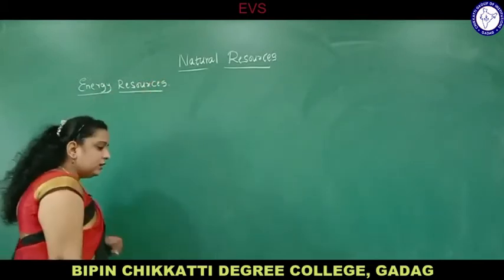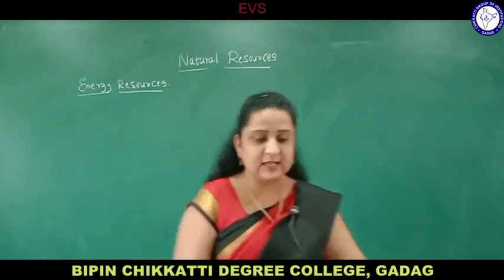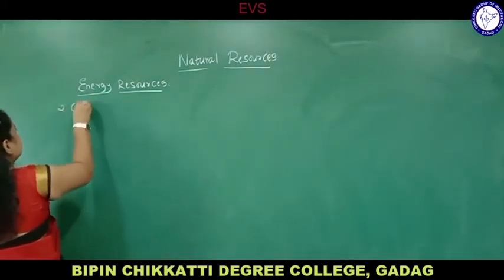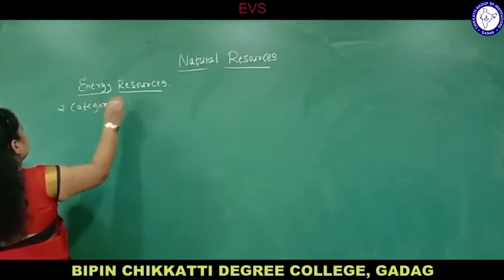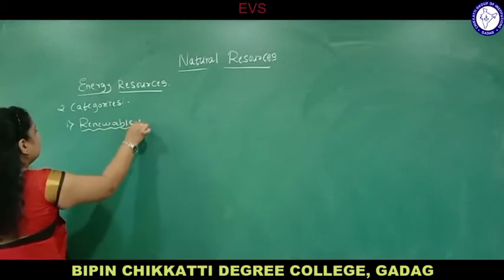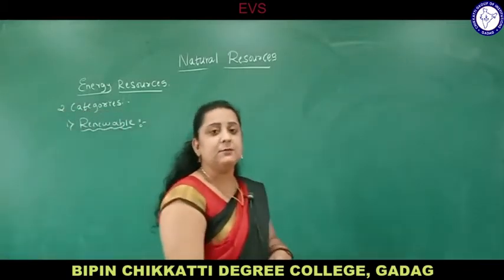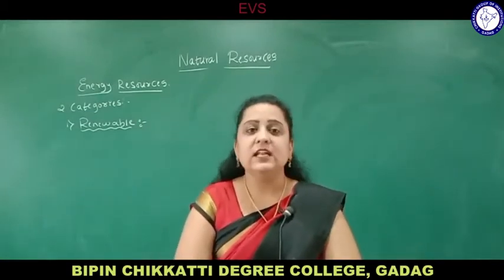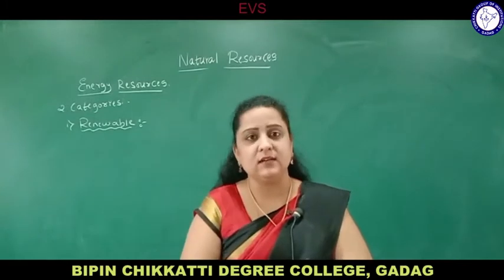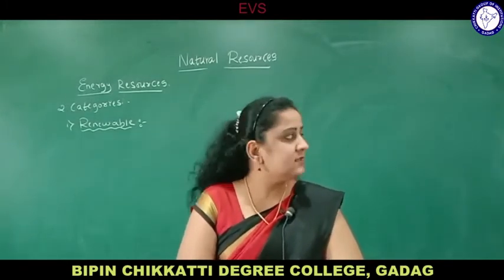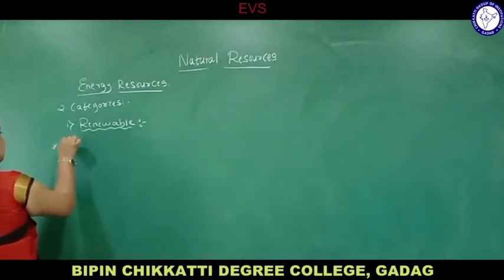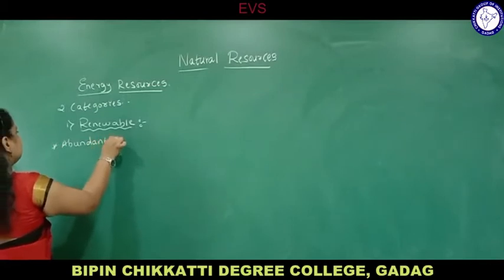Energy — it is a kind of renewable resource. Two categories are there in energy: renewable and non-renewable. First we will discuss about renewable. Renewable means whatever resource can be renewed is called a renewable resource. Renewable resources are always abundant in nature — they are present in huge quantity because they are renewed now and then. They do not exhaust. Point number one: abundant in nature.